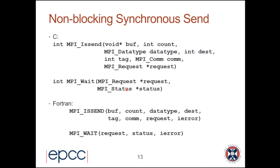If you issue MPI_Isend and then immediately MPI_Wait you have achieved precisely nothing - you have to put code between them to do something useful, like issue a receive. Non-blocking receive looks just like a normal receive but with MPI_Irecv - it returns immediately and sets up an inbox. Something is missing from the prototype compared to normal receive: the status is missing, because when the non-blocking receive returns no message has been received yet. The status is only filled in by the wait, when the operation is complete.